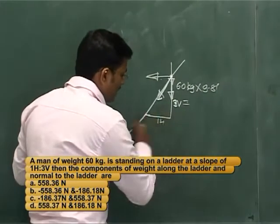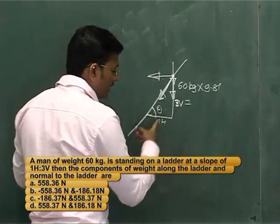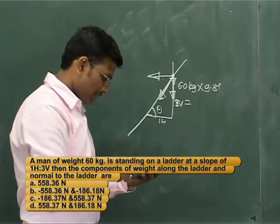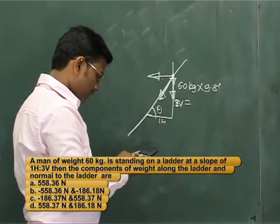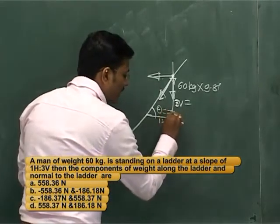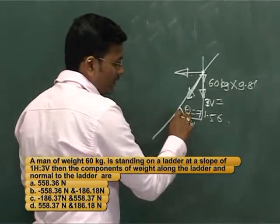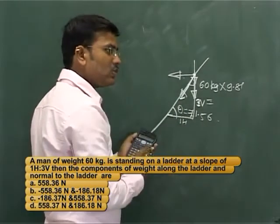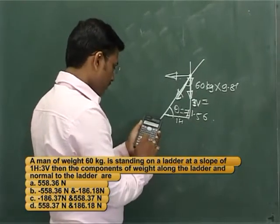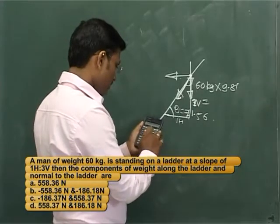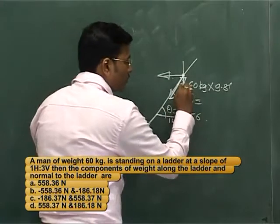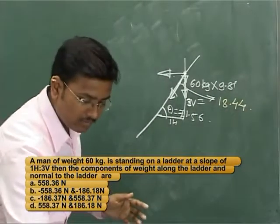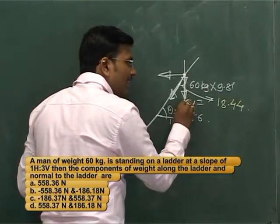They are asking for the component along the ladder and normal to the ladder. First I will calculate the angle — tan inverse of 3 divided by 1 — so theta comes out to be 71.56 degrees. This angle is 90 degrees, so the remaining angle — since the sum of angles in a triangle is 180 degrees — is 180 minus (71.56 plus 90), which gives the remaining angle as 18.44 degrees.